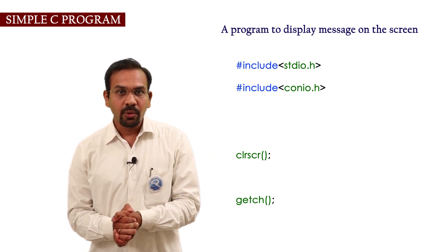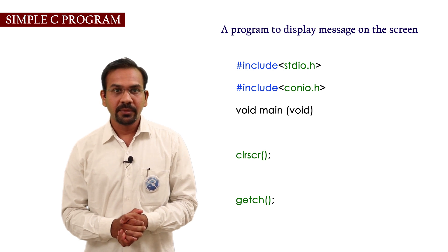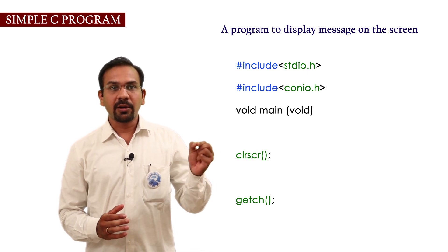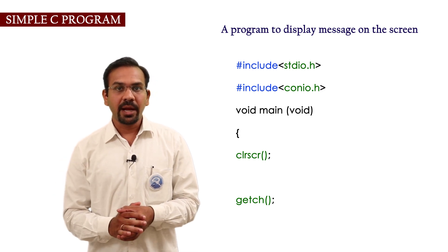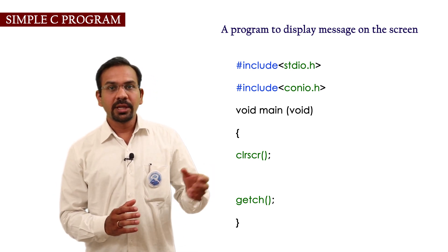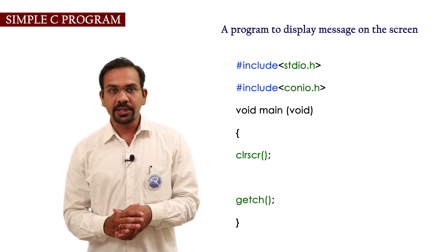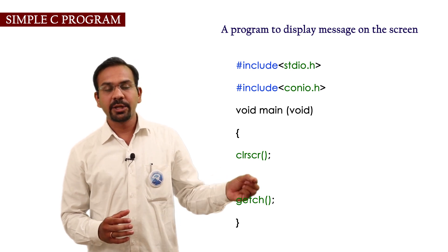Now after this we write the main function. It is the essential part of a program. The main function starts with opening curly bracket and ends with closing curly bracket. It consists of declaration part and executable part.